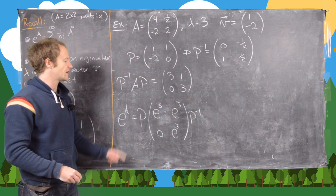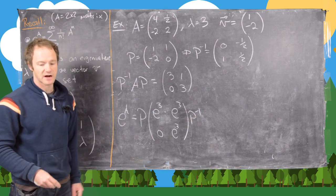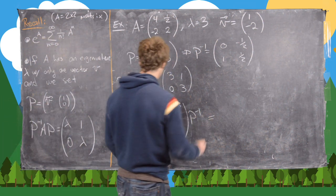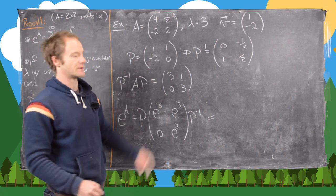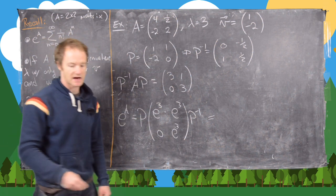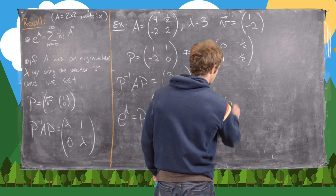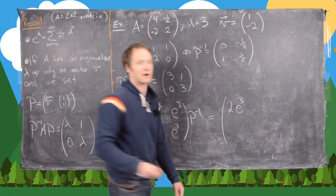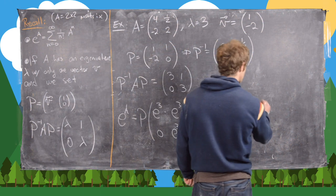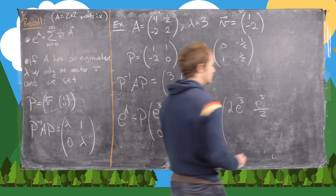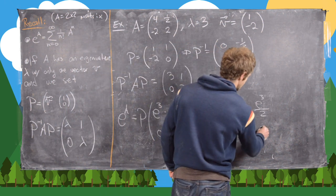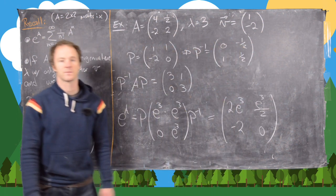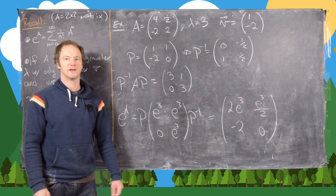So now I'll let you guys multiply this out super carefully. I'll just jump to the answer where I multiply P and P inverse on either side of this matrix. I get the following: [2e³, e³/2; -2e³, 0]. Okay, good. So that's the end of the video.